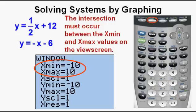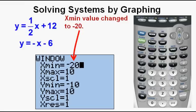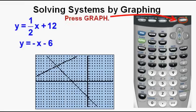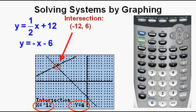The intersection is to the left of the view screen — we can see at the left where the lines look almost joined together. The intersection must occur between the x min and x max values shown in the window view. The item that needs to be changed is the minimum x value, negative 10. We change it to negative 20. Press graph — we see the two lines intersecting. Now press second, trace, 5, enter, enter, enter. We see the intersection at x equals negative 12 and y equals 6.